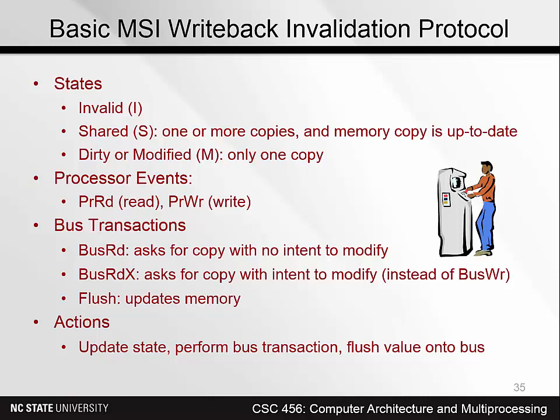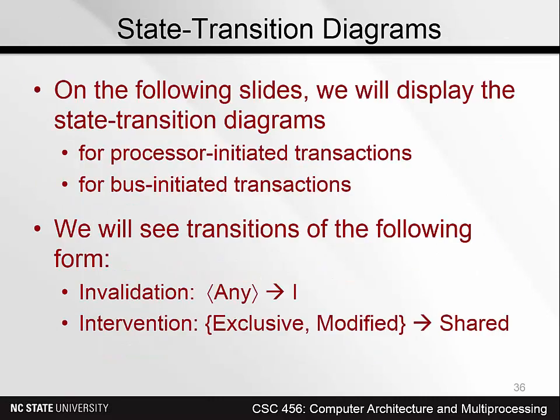When a read or a write occurs, the cache state must be updated accordingly. In most cases, a bus transaction will be needed, and sometimes a cache line needs to be flushed onto the bus. These protocol actions are represented in the state diagram and in our animation. We're about to see our first state transition diagram — first the diagram for processor-initiated transactions, and then the diagram for bus-initiated transactions.